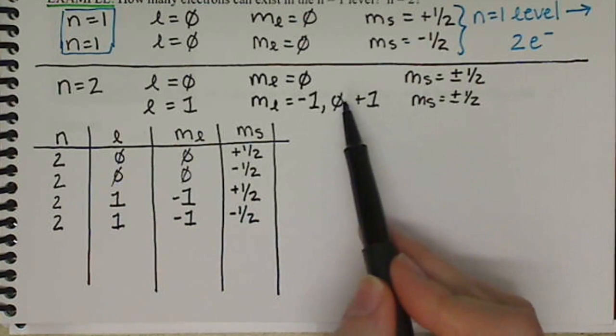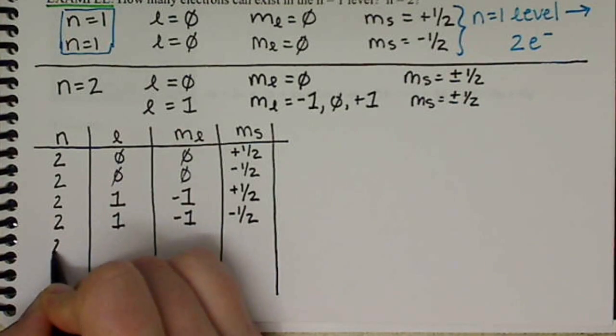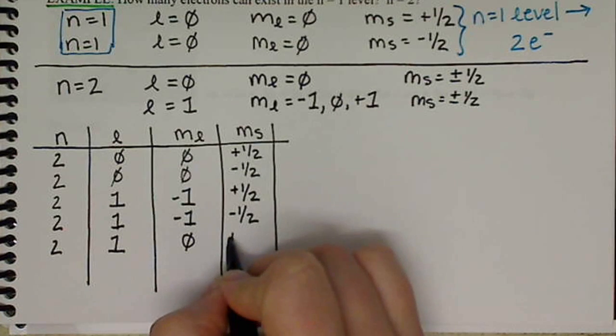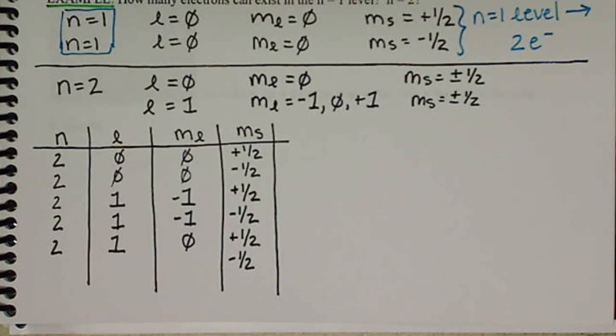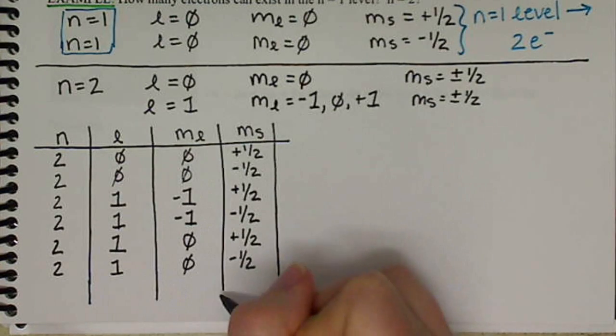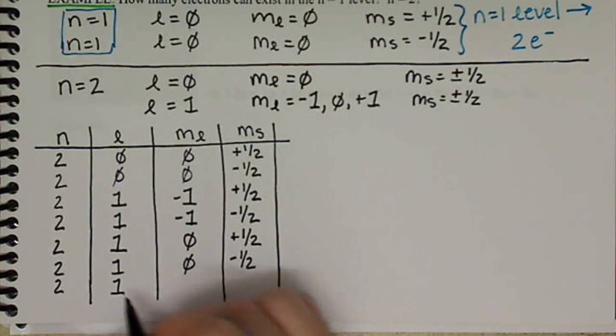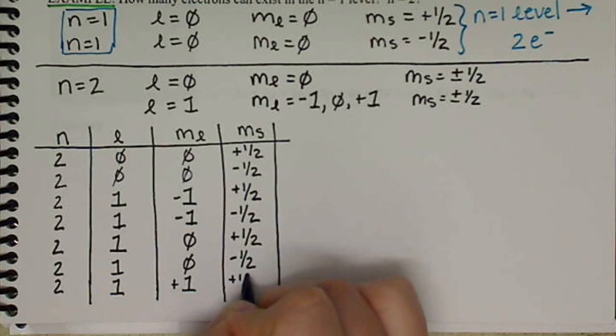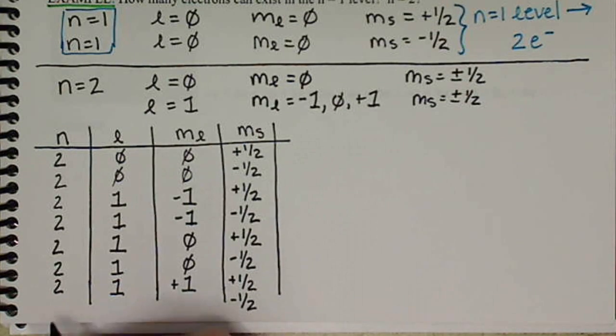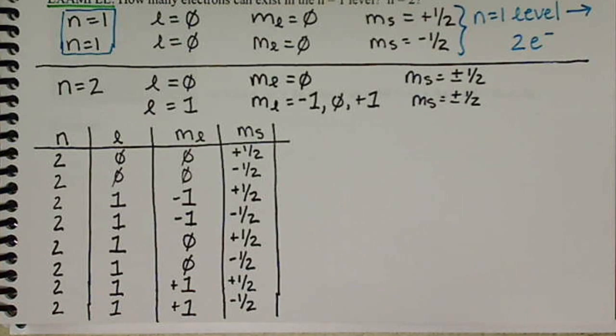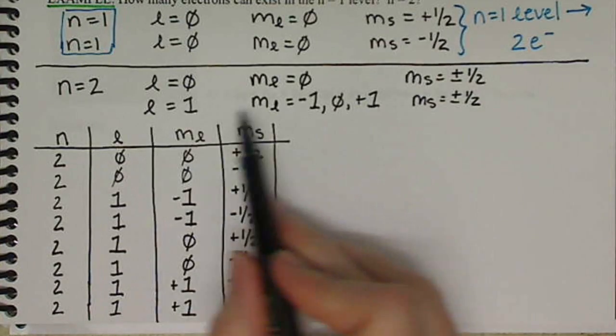Now we'll have two M sub S values when M sub L equals 0. So N is equal to 2, we're still working with L equal 1. Now we want to work with M sub L equals 0, and we have two M sub S values of plus 1 half and minus 1 half. Then we move to M sub L equals positive 1 with both spin values. And we've now exhausted all of our possibilities.